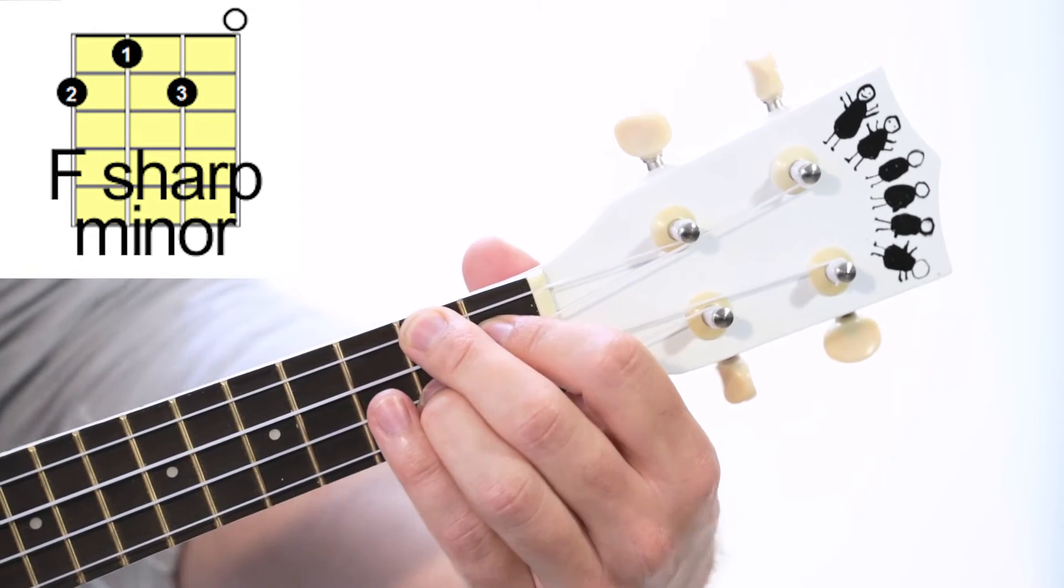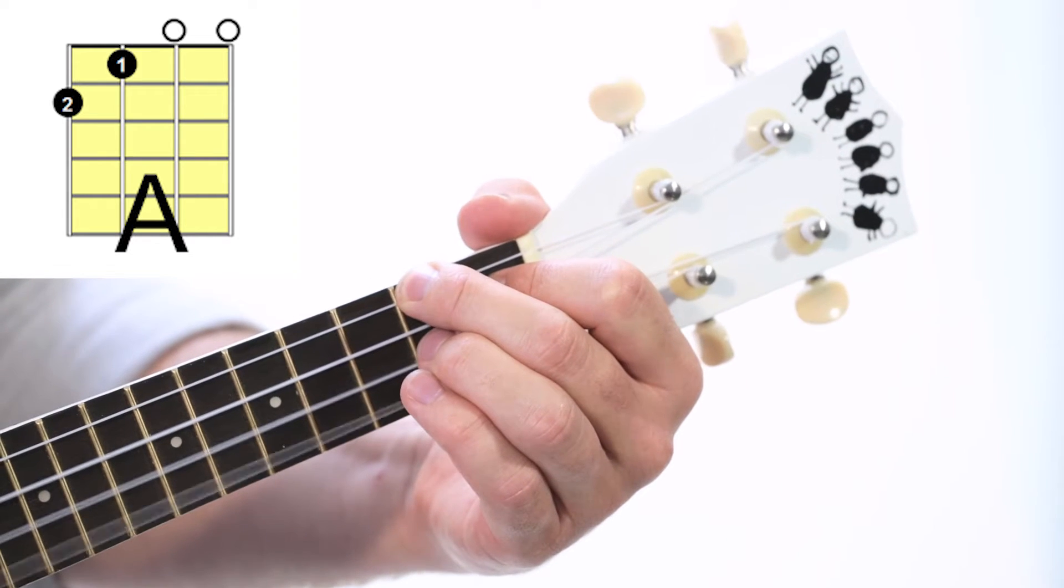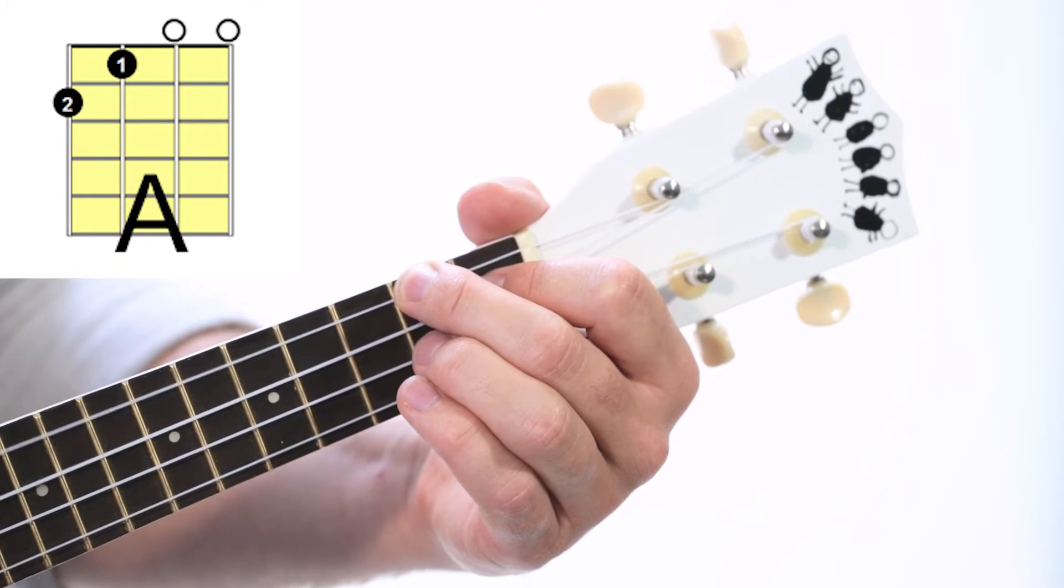After that we're going to be playing the chord A. Which all you need to do is just take off the third finger. So that's second finger and first finger.